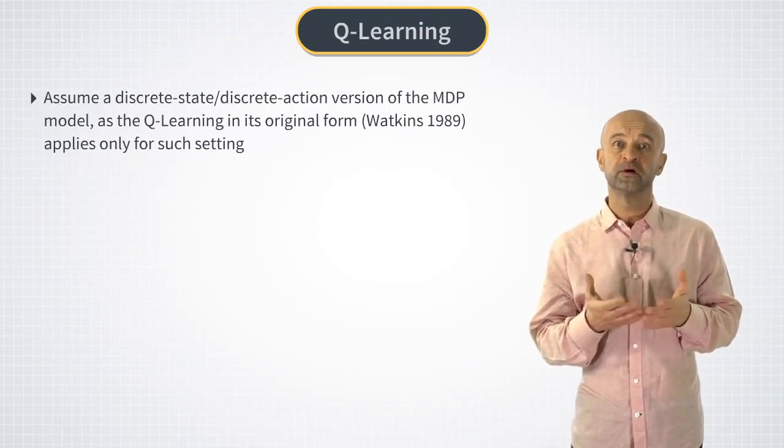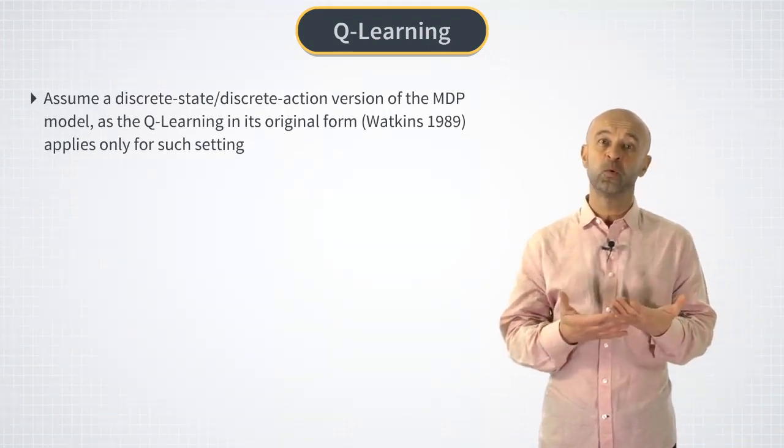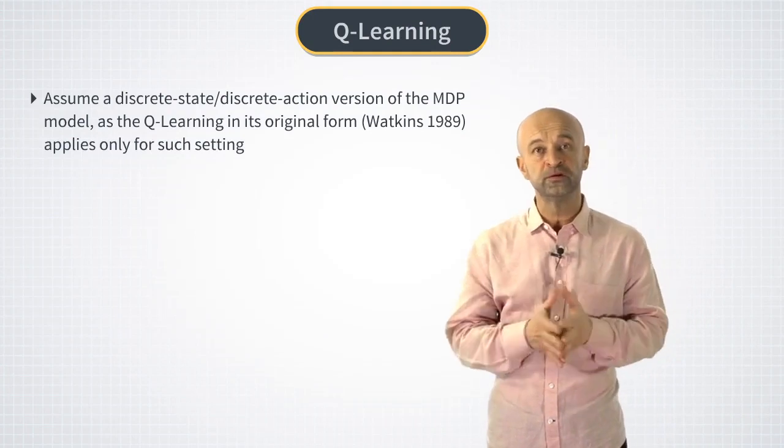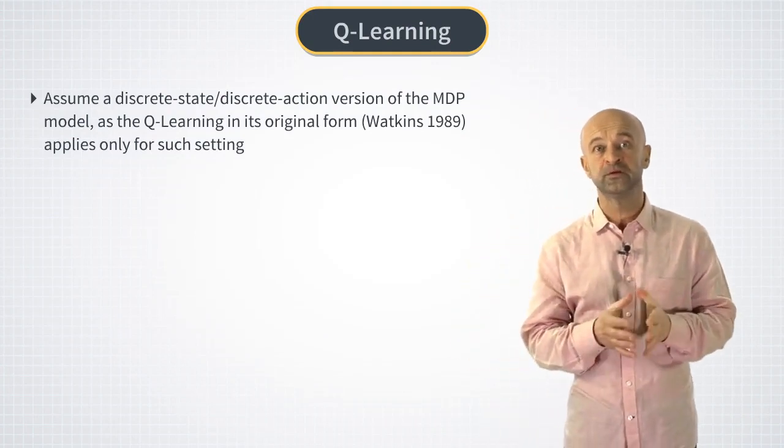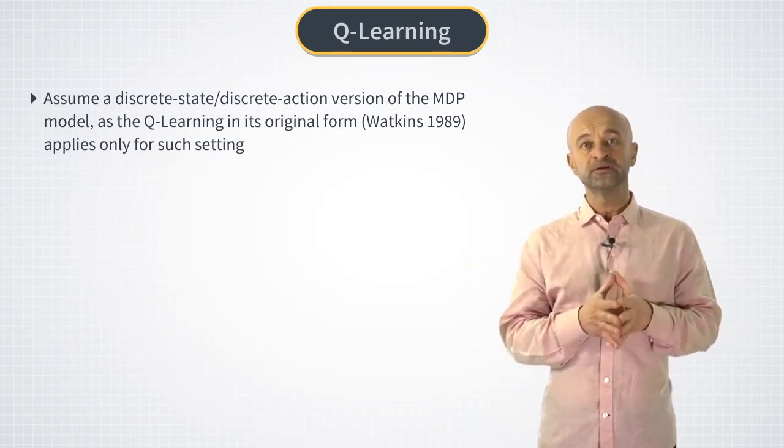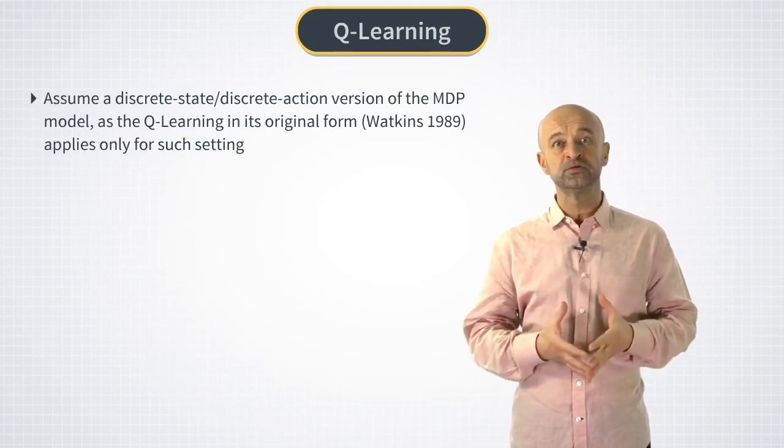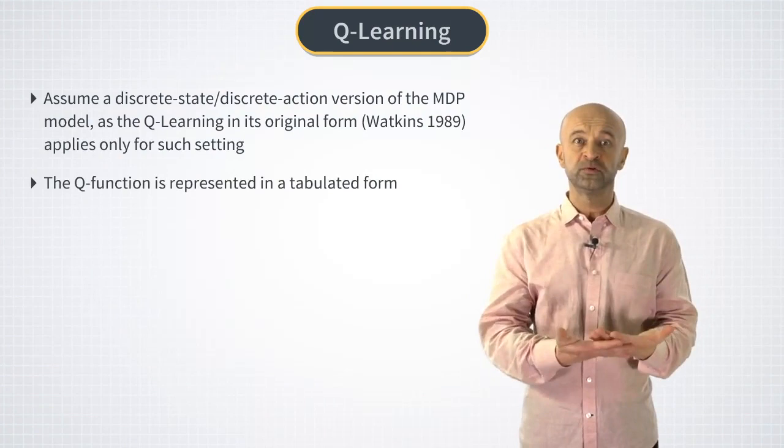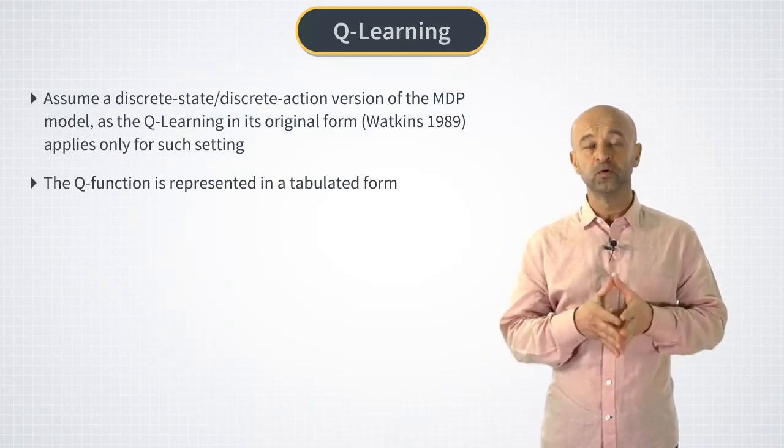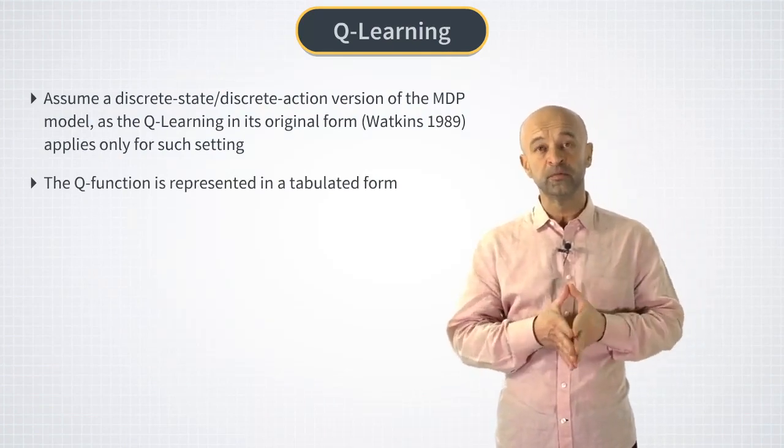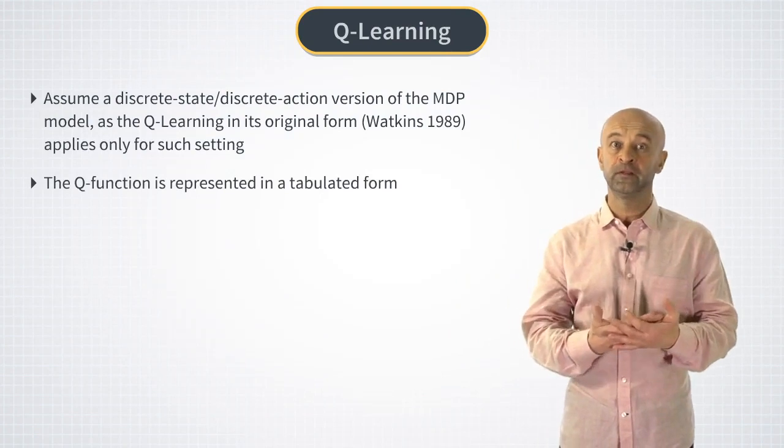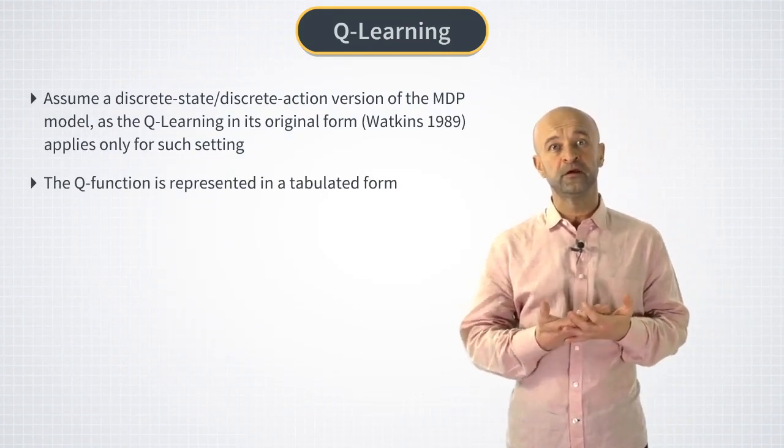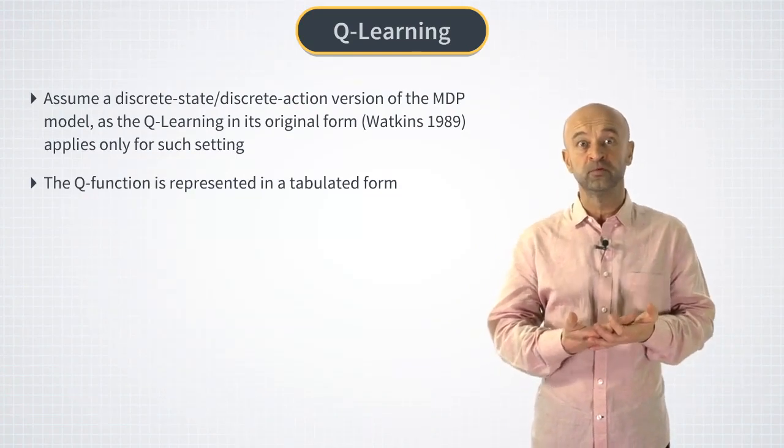Now in its original form, as suggested by Watkins, Q-learning works only in a setting of discrete states and discrete actions. In this case, instead of a continuous valued Q-function, it's represented as a discrete table with one value of the Q-function per each combination of state and action. In this case, we can say that the Q-function is given in a tabulated form.